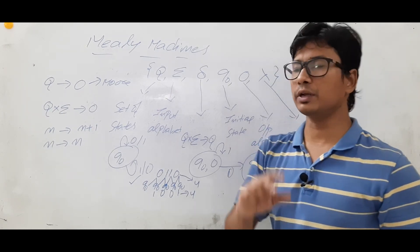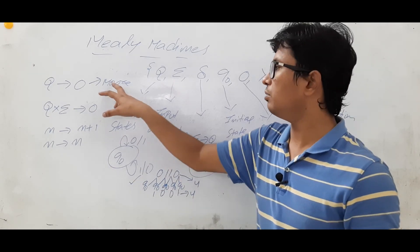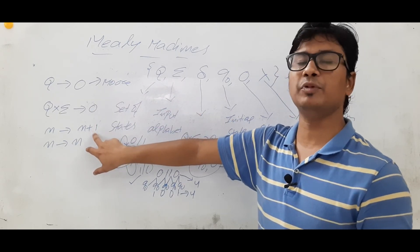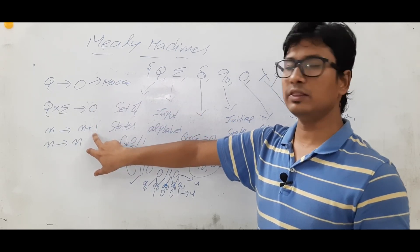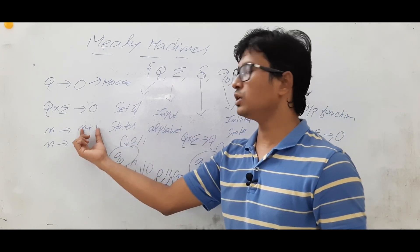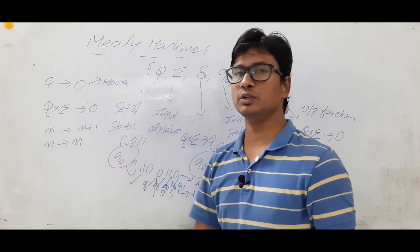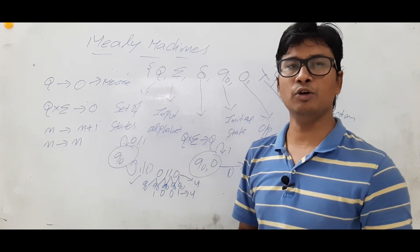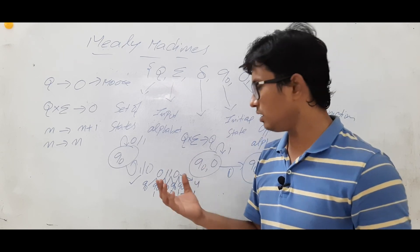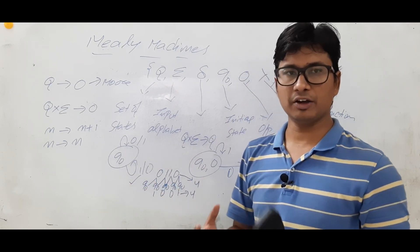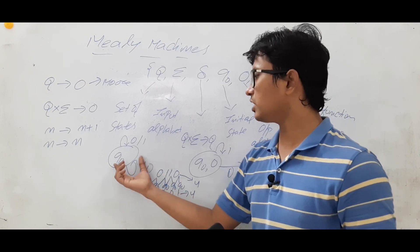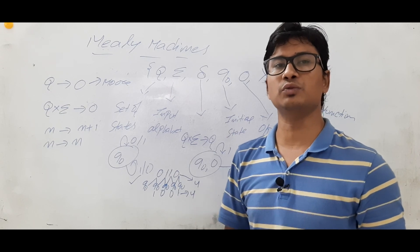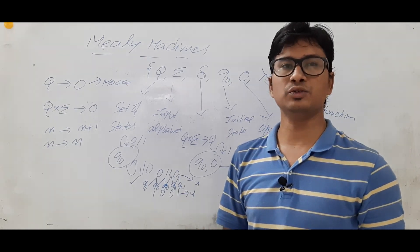You need to remember two differences between a Moore machine and a Mealy machine. One is the output function, and the other is the output string length. In a Moore machine you get length n plus 1; in a Mealy machine you get length n. I hope you have understood how to represent and construct a Mealy machine. I will discuss further examples so you understand the concept better. Thank you so much.